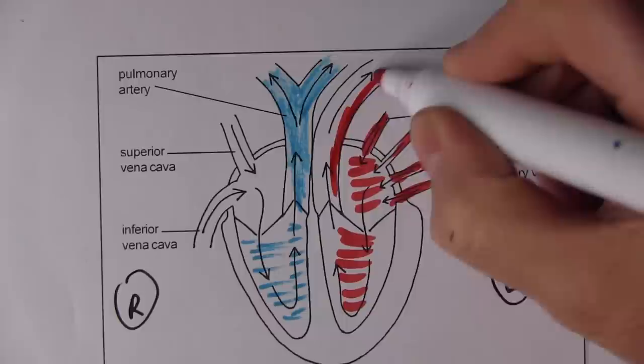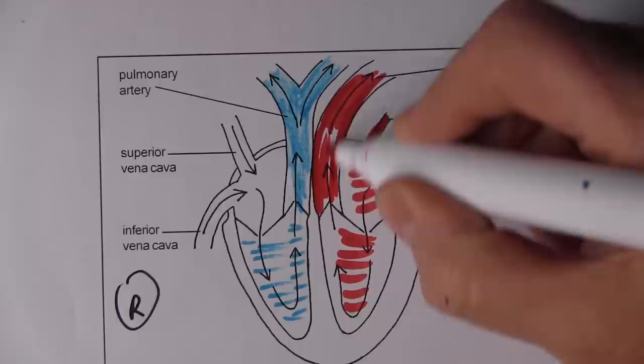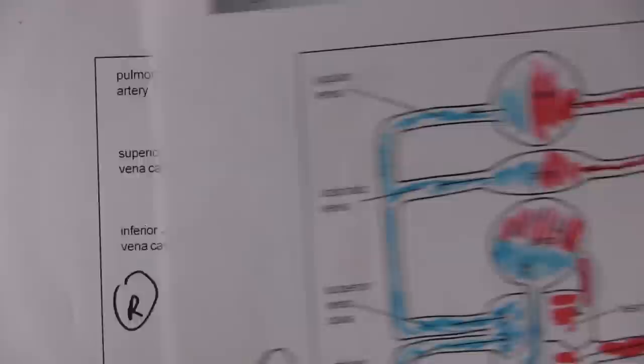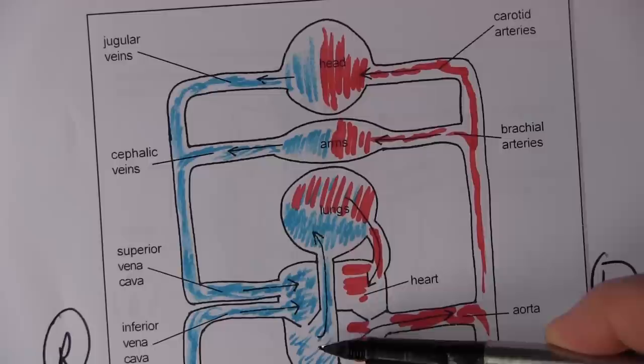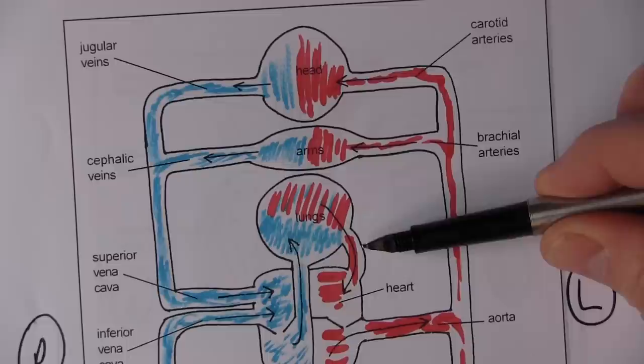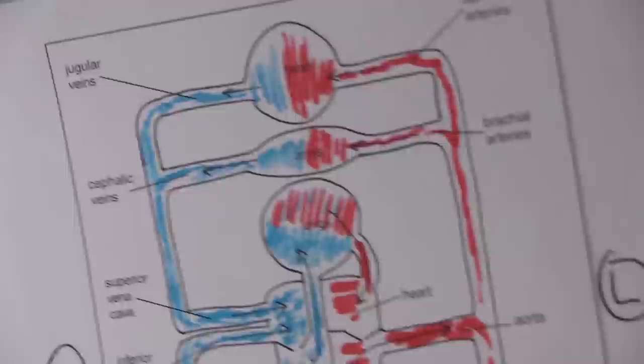The left ventricle contracts and sends blood out through the aortic valve into the aorta and into the systemic circulation — to the whole body. 'Soma' is just a Greek word meaning body. So to recap: the pulmonary artery takes blood from the right ventricle to the lungs, the aorta takes blood from the left ventricle to the body, and the pulmonary veins take blood from the lungs back to the left side of the heart.